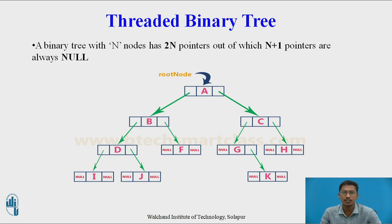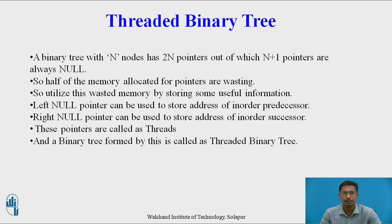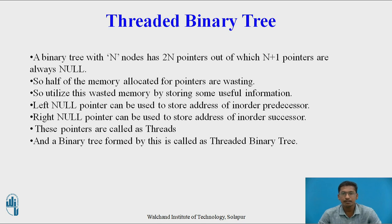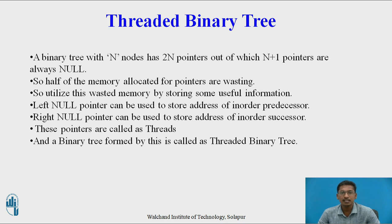To overcome this disadvantage we use a threaded binary tree. A binary tree with n nodes has 2n pointers out of which n+1 pointers are always null, so half of the memory allocated for pointers is wasted. To utilize this wasted memory by storing useful information, left null pointers can be used to store the address of the in-order predecessor — the previous node in in-order traversal — and right null pointers can be used to store the address of the in-order successor — the next node in in-order traversal. These pointers are called threads, and a binary tree formed by this is called a threaded binary tree.